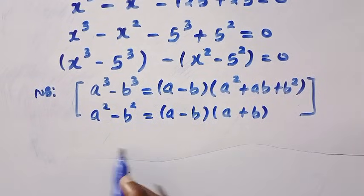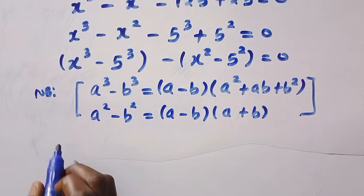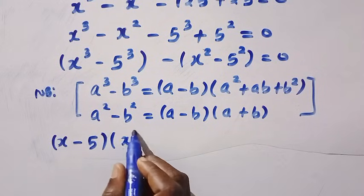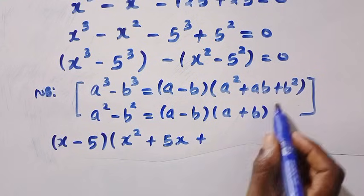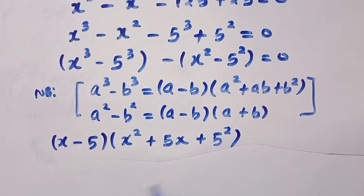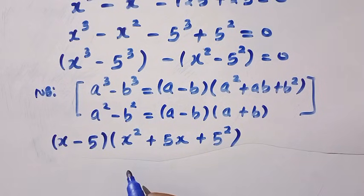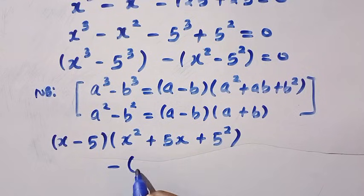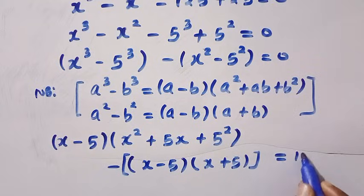Comparing x cubed minus 5 cubed with the formula a cubed minus b cubed, we expand it as: x minus 5, multiplied by x squared plus 5x plus 5 squared. Then for x squared minus 5 squared, we write it as: minus open bracket x minus 5, times x plus 5, close bracket. All of this equals 0.